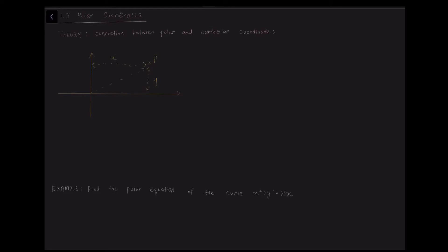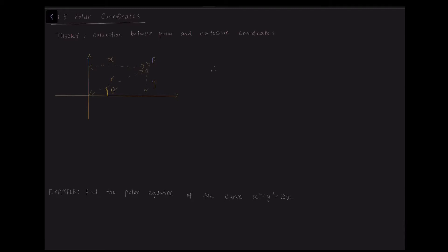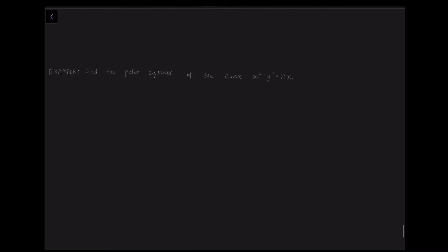However, there is another way to represent this point, which is the polar coordinates represented by R and Theta. So R is the length of the point from the origin, whereas Theta is the angle between the X axis and the line of R. With simple trigonometry, we know that X equals R cos Theta, Y equals R sine Theta, R equals the square root of X squared plus Y squared by Pythagoras' theorem, and tan Theta equals Y over X. By remembering these four identities, we can convert any Cartesian coordinates into polar coordinates.